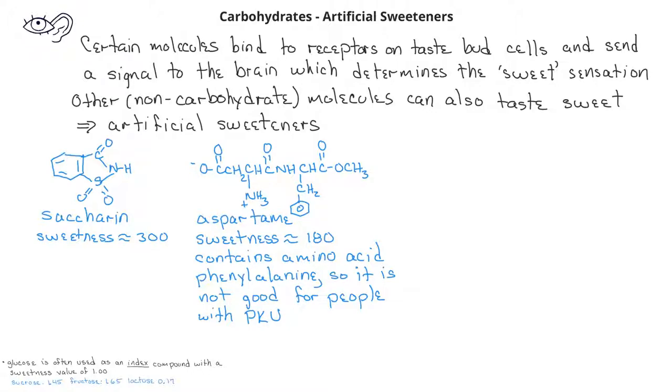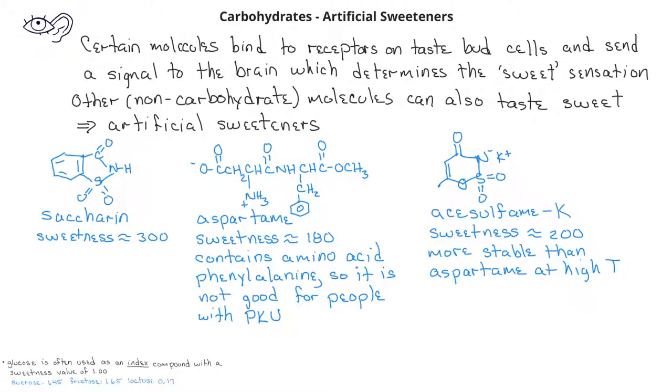Another artificial sweetener is acesulfame-K, which was approved by the FDA in 1988. Acesulfame-K is considered to be 200 times sweeter than glucose. An advantage of acesulfame-K is that it's more stable than aspartame at higher temperatures.